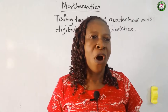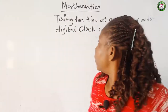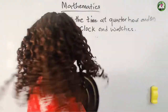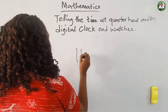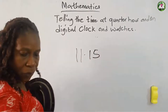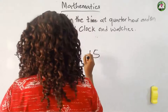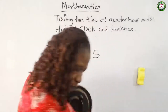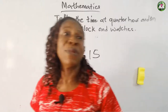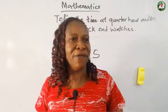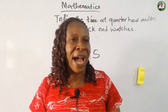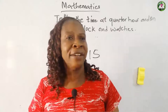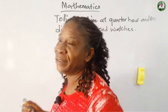Some clocks have digital numbers, like your mommy's handset. At times you see something like eleven fifteen. When you see eleven fifteen, that means the time is past eleven — fifteen minutes past eleven. If you don't want to say it is fifteen minutes past eleven, you call it quarter past eleven. That's good.